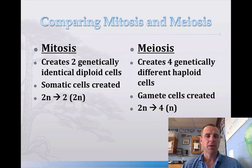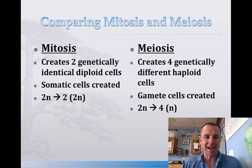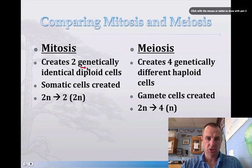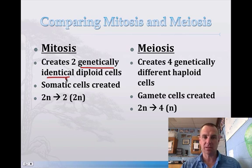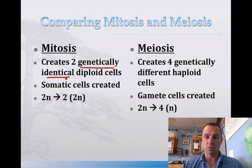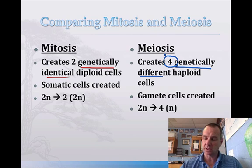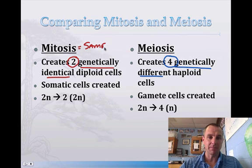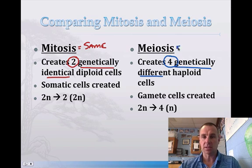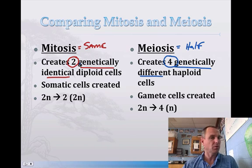I love to end the chapter by comparing mitosis to meiosis because they're compared so often. In mitosis, you produce genetically identical cells — if it's a red cell, it's going to be a red cell; if it's a hair cell, it's going to be a hair cell, with exactly the same number of chromosomes. In meiosis, you produce genetically different cells. Also, meiosis creates 4 cells while mitosis creates 2 cells. I like to think of mitosis as 'same' and meiosis as 'half.'